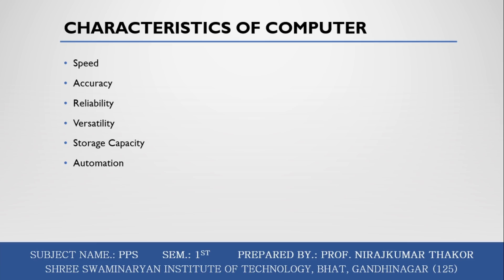Regarding storage capacity, the computer has internal memory known as primary memory (RAM) where a wide amount of data can be stored. We can also save data using secondary storage devices such as pen drive, floppy disk, hard disk, and compact disk. Automation is another feature of the computer system. It performs tasks previously instructed by a human. For example, to print pages through a printer, we give instructions only once and the work continues automatically. These are the characteristics of computers: speed, accuracy, reliability, versatility, storage capacity, and automation.